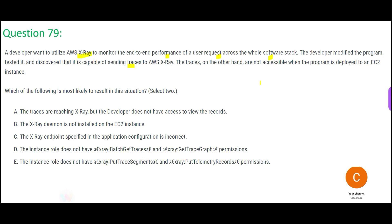The problem: traces are not accessible when the program is deployed on an EC2 instance. What is the most likely reason? The first option says traces are reaching X-Ray but the developer doesn't have access to view them. However, the question doesn't mention any access error message, so that may not be the right answer. We need to look for a better explanation.